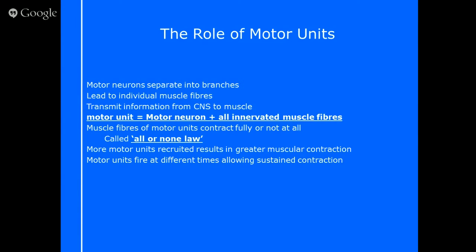Some motor units include a lot of muscle fibres — for example, in your quads, which have to generate a lot of force. So they have one motor neuron to lots of muscle fibres, meaning every time you ask for that to contract, it contracts with a big force and it's less complex. Whereas in your hand, you need less force but more agility, so you'll have fewer fibres attached to each motor neuron. The motor units are smaller, which gives you more options and more dexterity in your hands compared to a quadriceps, for example.